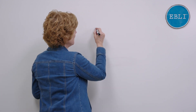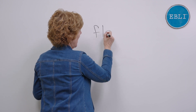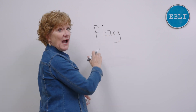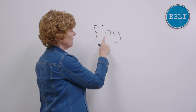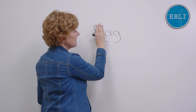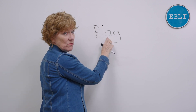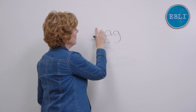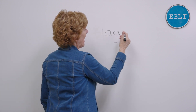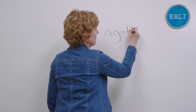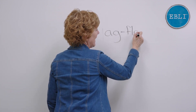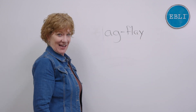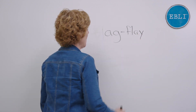Now, if you have something like flag, where there are two consonants before you get to the vowel, you take away both of those consonants and start with that vowel. So flag would be AG, and then you add FL and then AY at the end. So flag would be agflay.